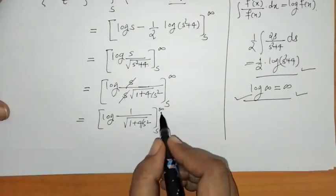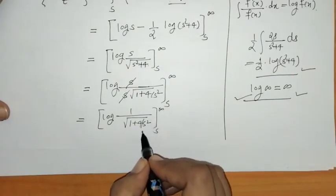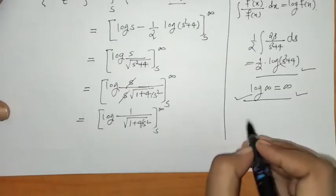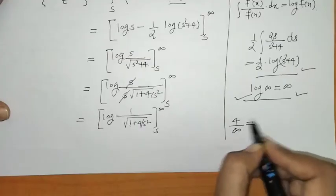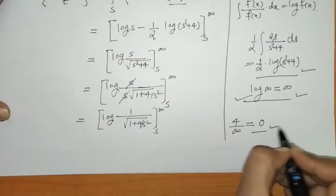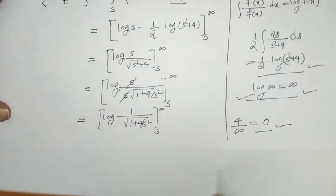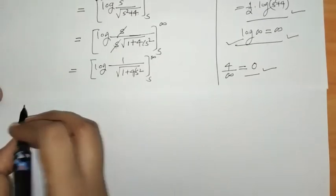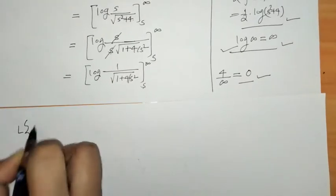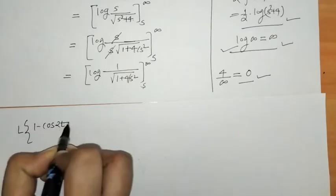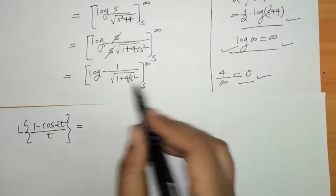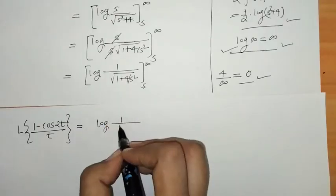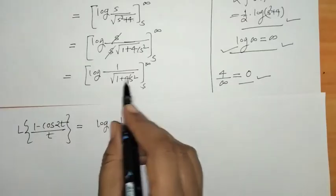Now we can apply the limit. When we put s = infinity, we get 4/infinity = 0, so we now get a finite result. We write this as the Laplace of (1 - cos(2t))/t. For the upper limit, we get log(1 / √(1 + 0)) = log(1) = 0.